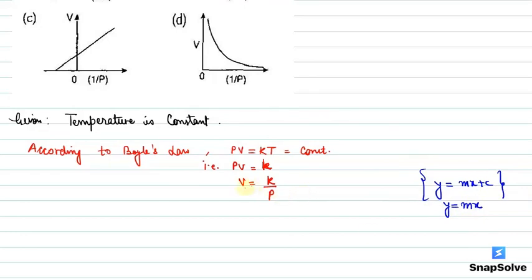What is the y-coordinate? V. And x-coordinate is 1 by P. M is the slope. So this is the straight line equation that passes through the origin.